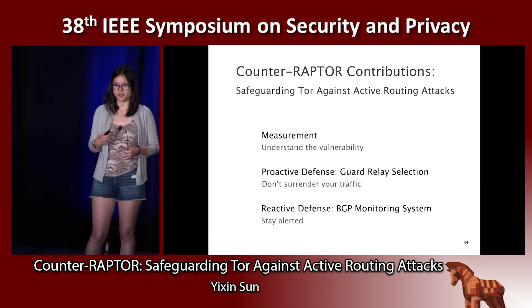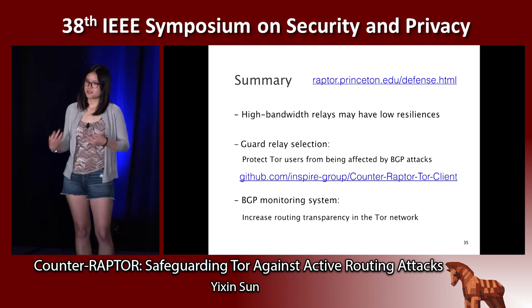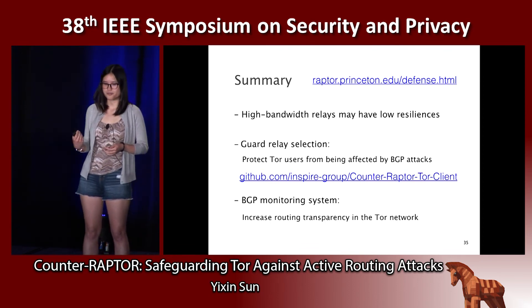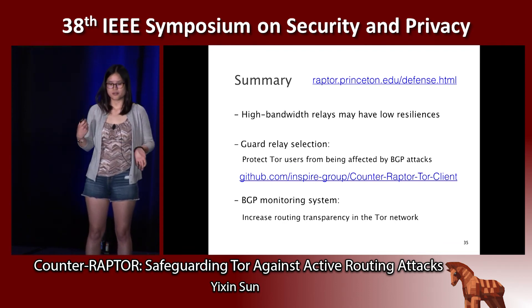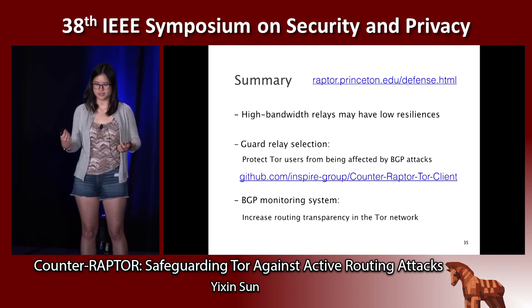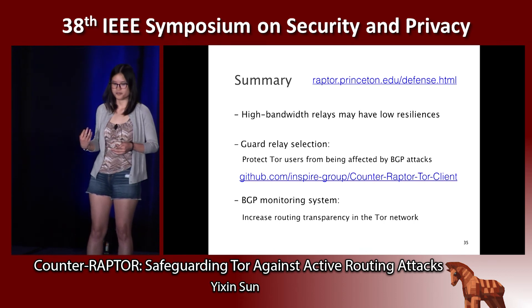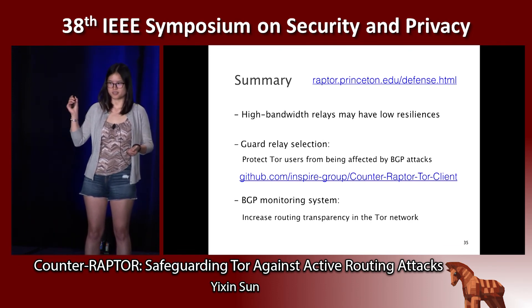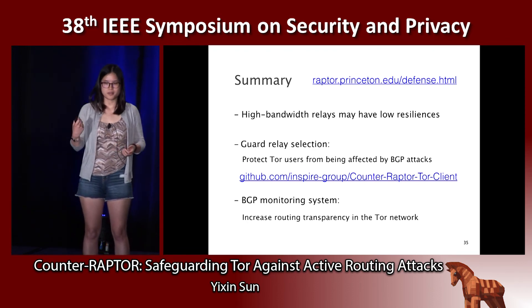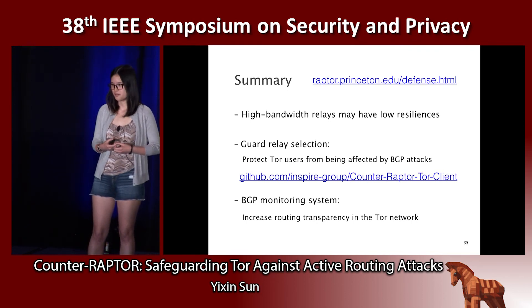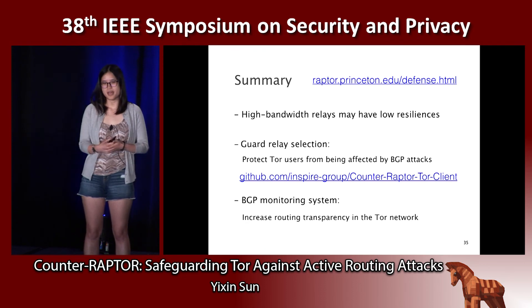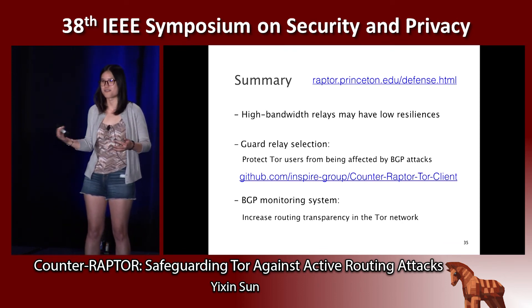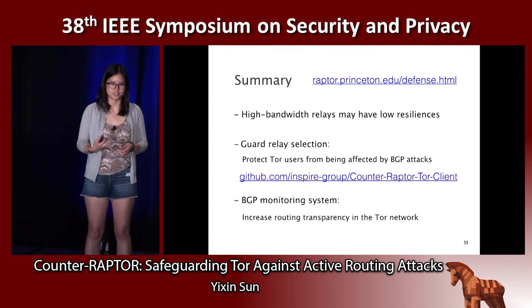In summary, we performed the first measurement study to understand the vulnerability of the Tor network to active attacks, finding that high Tor bandwidth relays may have low resilience. We designed a new guard relay selection algorithm to protect Tor users from BGP attacks, and deployed a live BGP monitoring system to increase routing transparency. We have a project website with all information, our algorithm is implemented in the Tor client with code on GitHub, and we have ongoing discussion on the Tor dev mailing list about integrating these defenses into the live Tor network.